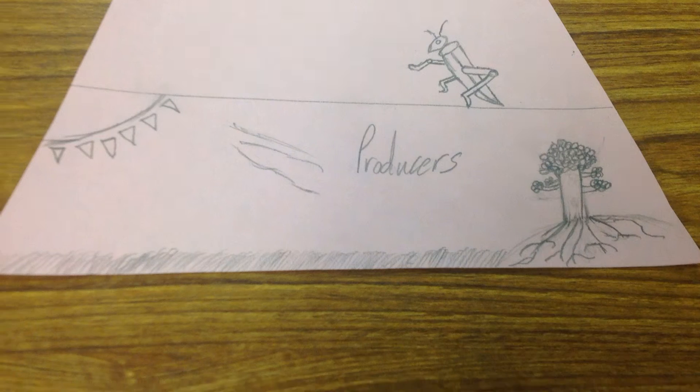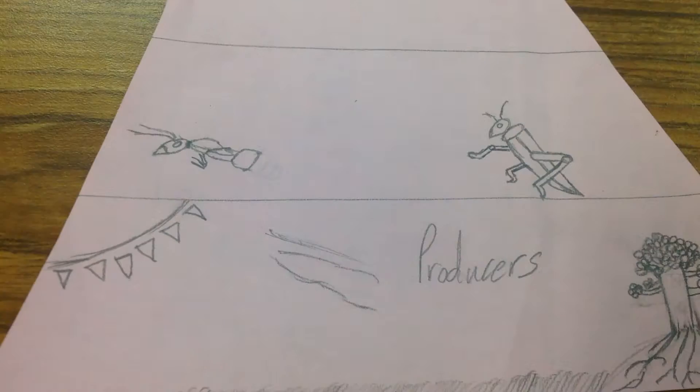Hey guys, today we're talking about energy pyramids. As you can see, the bottom of the energy pyramid are called producers, which are grass and trees.